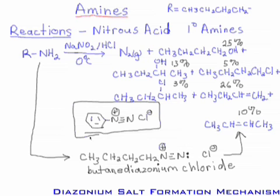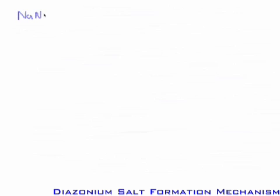We have several issues to deal with. First and foremost, how you form a diazonium salt from a primary amine — the reaction mechanism. And then we want to examine the reaction mechanisms for the decomposition. Let us begin by examining the reaction mechanism for the formation of the diazonium chloride. The first reagents in solution are sodium nitrite, NaNO2, and HCl. NaNO2 plus HCl produces sodium chloride and HNO2, which can be written as HONO — that's nitrous acid.